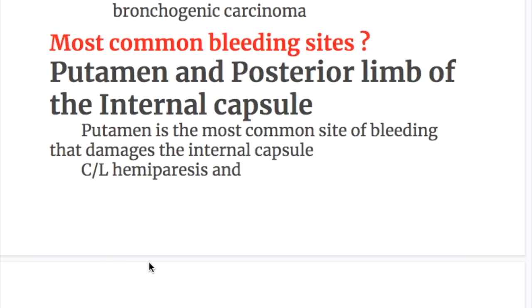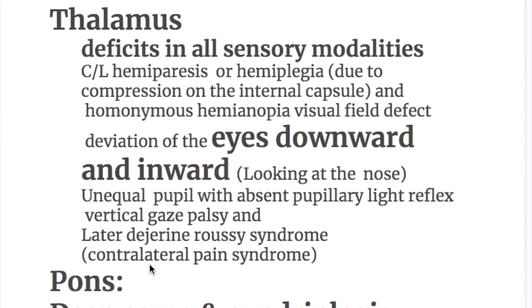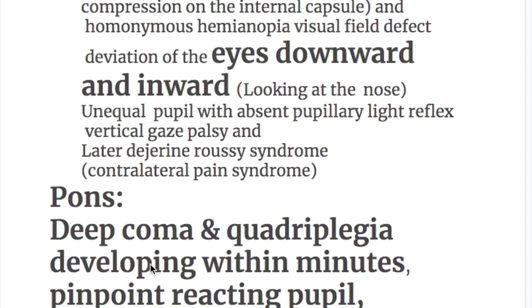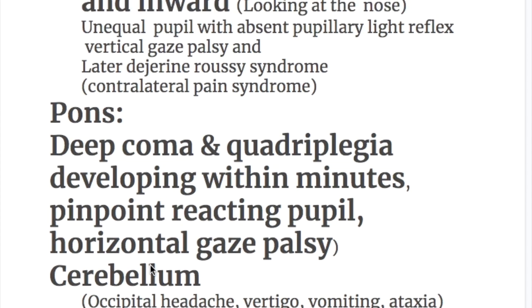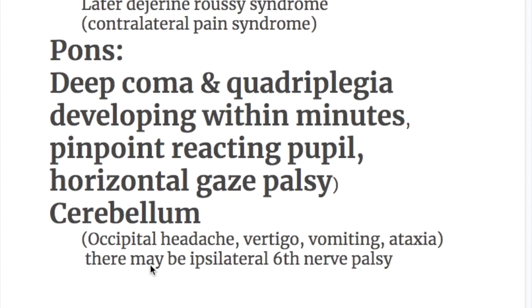The most common bleeding sites are: number one, the putamen and posterior limb of the internal capsule; number two, thalamus; number three, pons; and number four, cerebellum.